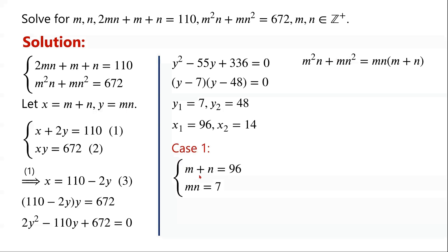So case 1: M plus N equals 96, MN equals 7. We're given that M, N are positive integers. So from MN equals 7, we know that M, N are both factors of 7.